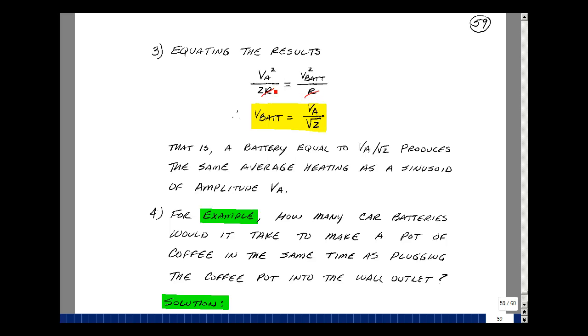The R's cancel, and we take the square root of both sides of the equation. We would then get V_battery equals V_A divided by the square root of 2. What this means is that a battery equal to V_A over the square root of 2 produces the same average heating as a sinusoid with an amplitude of V_A.